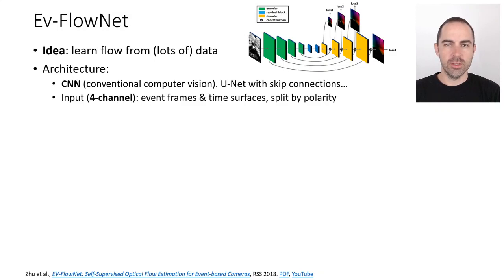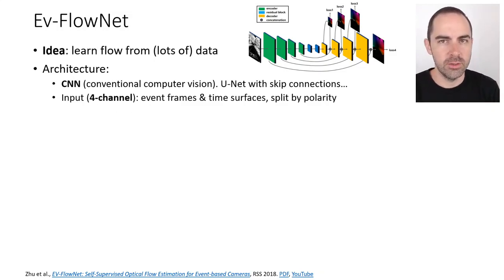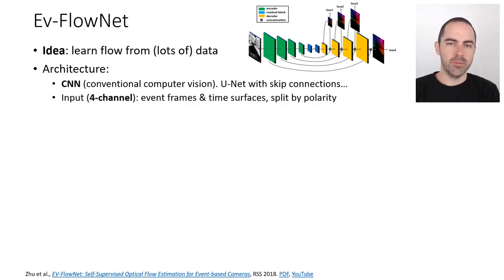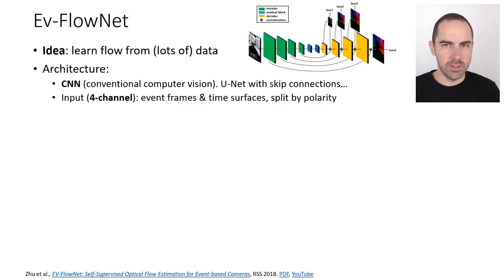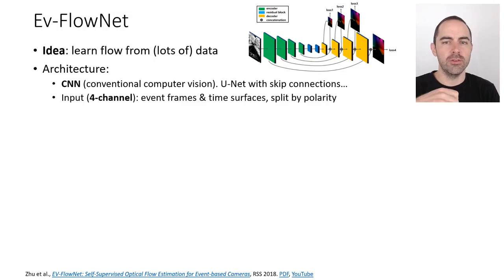The question is also: what's the input? The architecture is a convolutional neural network — conventional computer vision with a U-Net. The input has four channels. In conventional computer vision, a channel is a monochrome image; a four-channel input is a 3D array with four in the third dimension. These are event frames: for every pixel you count the number of positive events and the number of negative events.